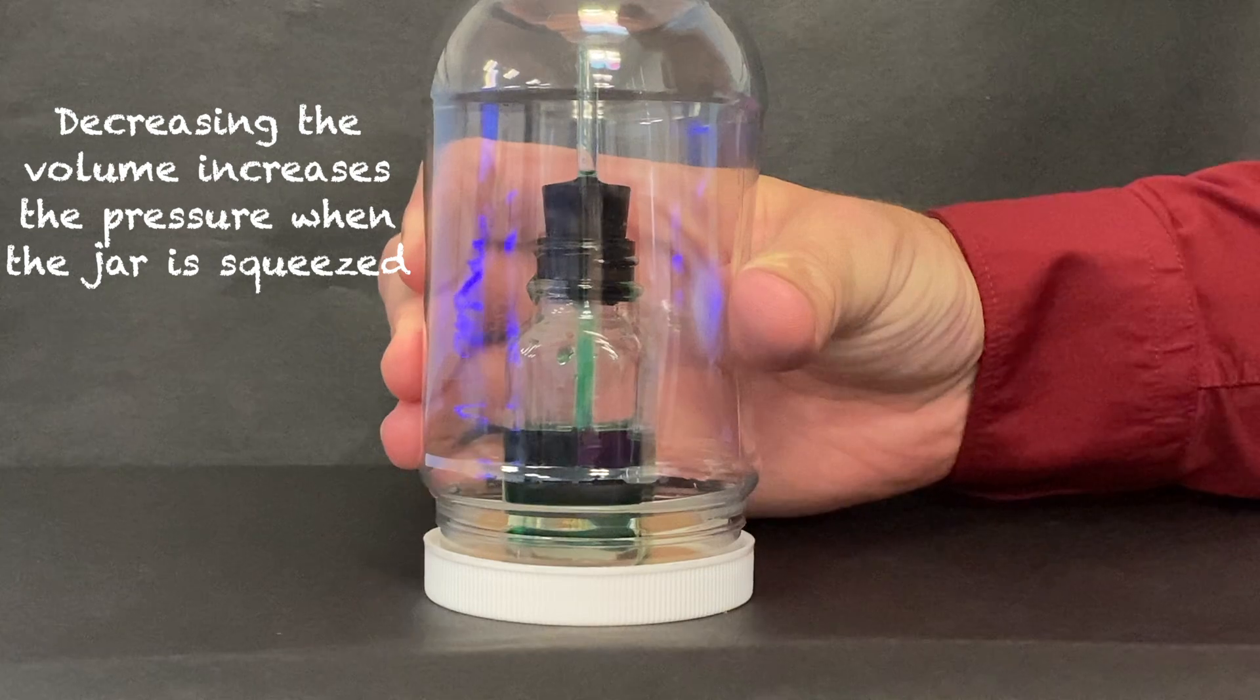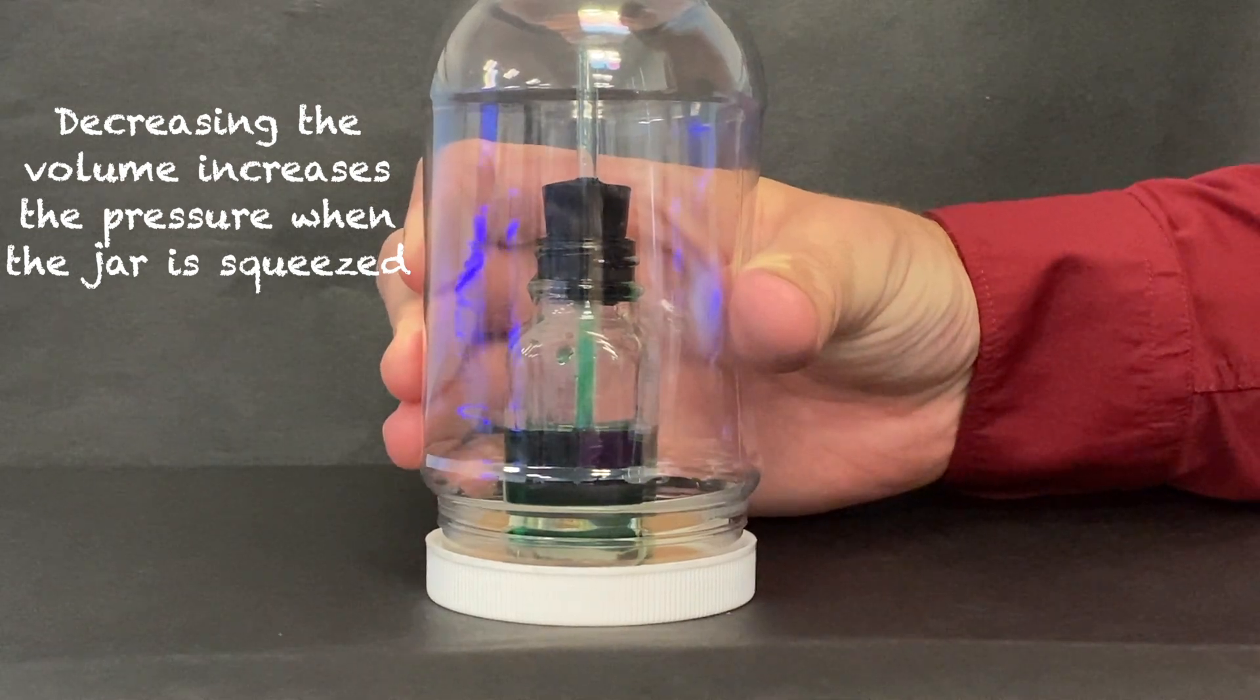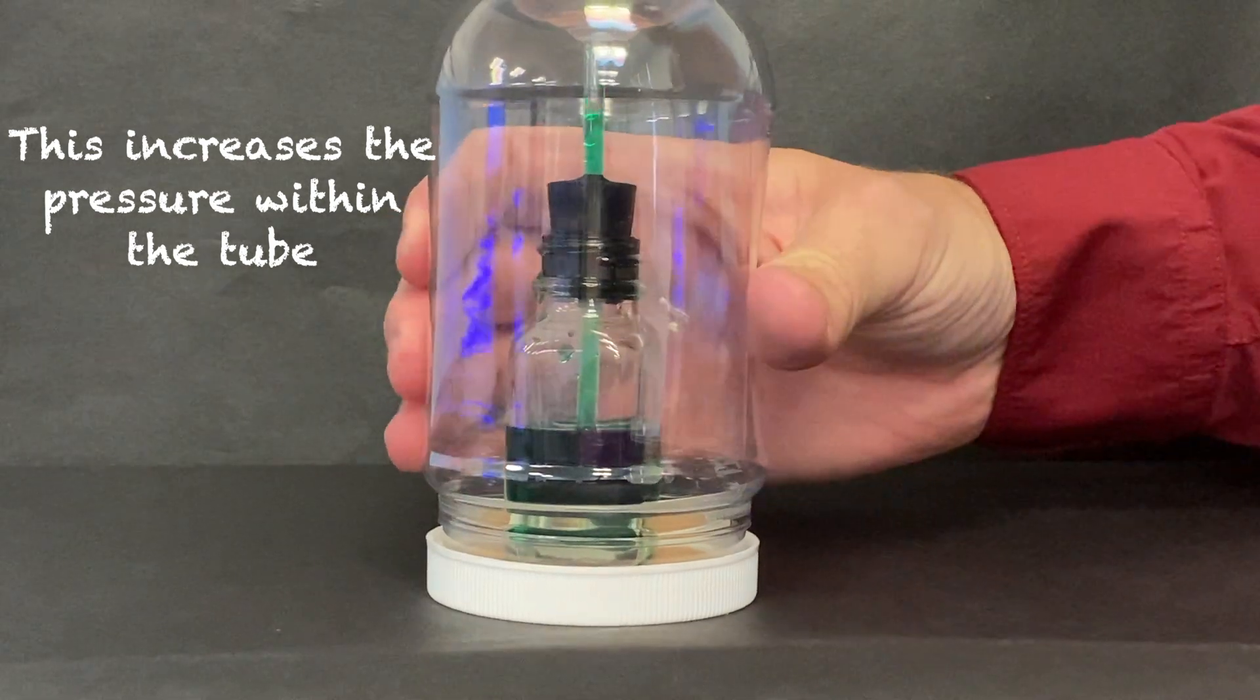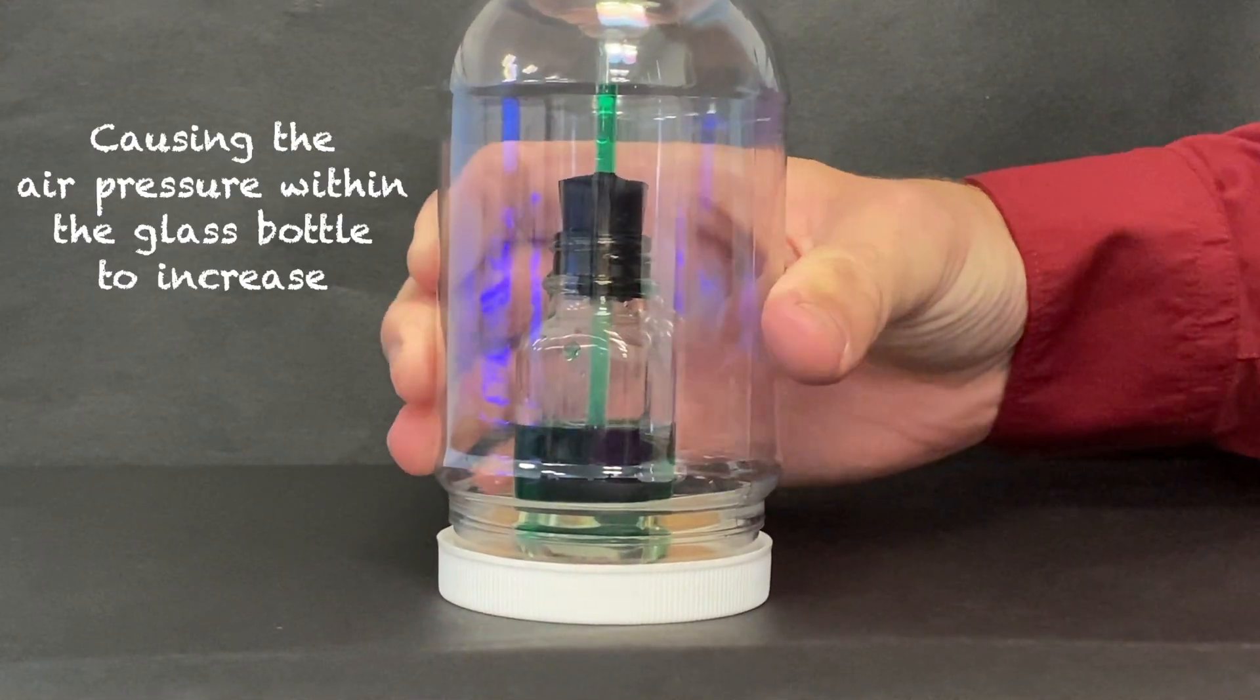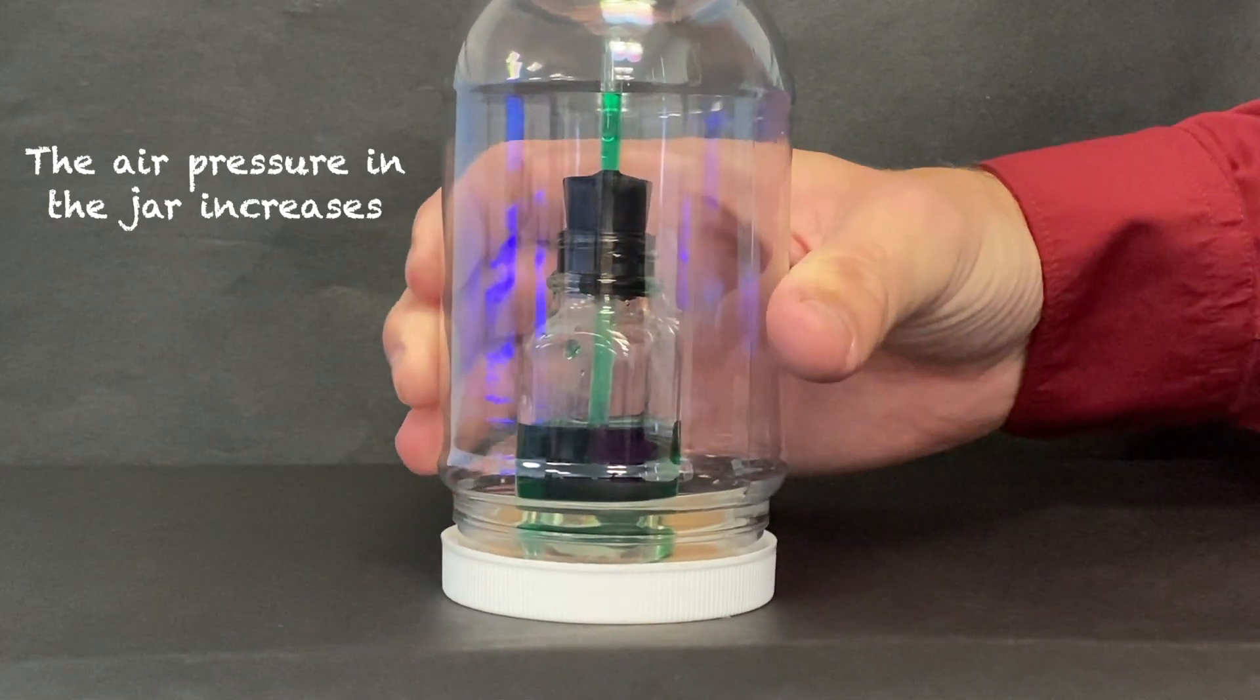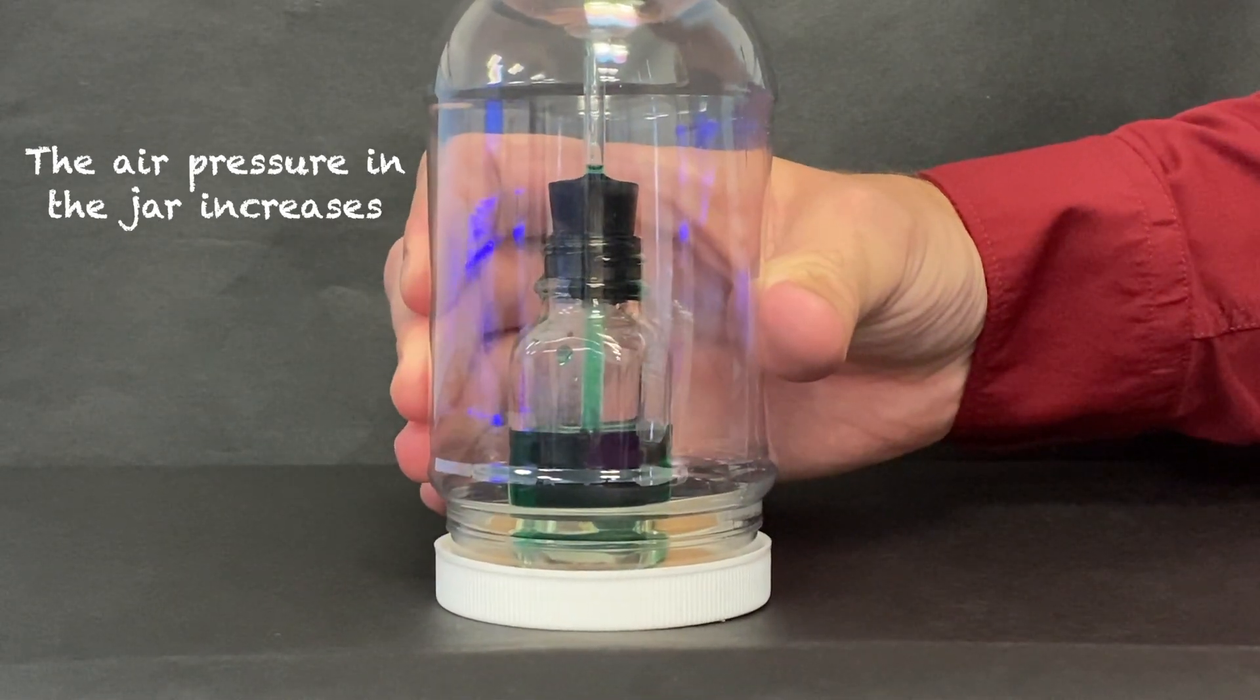Furthermore we decrease the volume of the jar and increase the air pressure when we squeeze the jar. The pressure increased on the water in the tube which increased the air pressure in the bottle. The volume of air in the bottle was compressed and the water moved down to fill the space in the bottle.